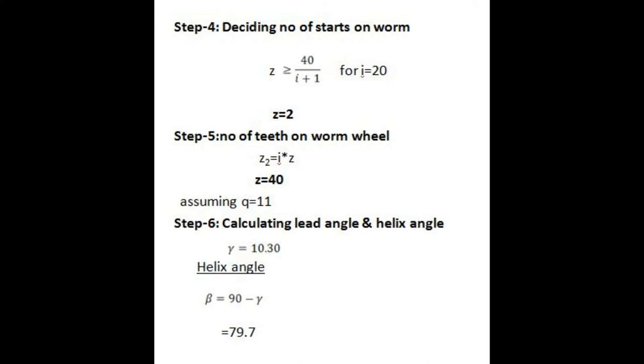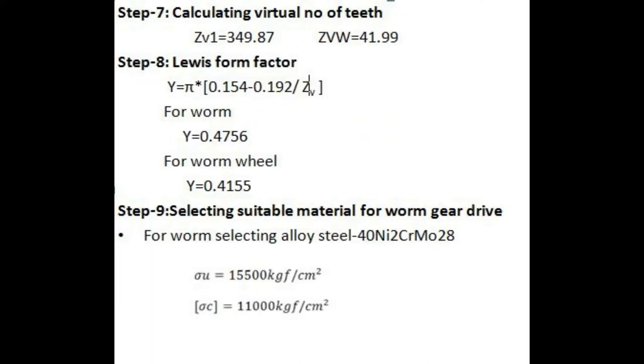Step 6: Calculating lead angle and helix angle. Gamma equals 10.3, where gamma is lead angle. Helix angle beta equals 90 minus gamma, equals 79.7 degrees.